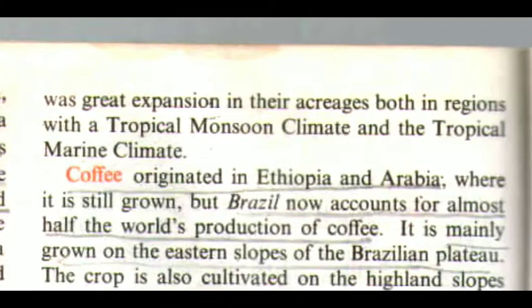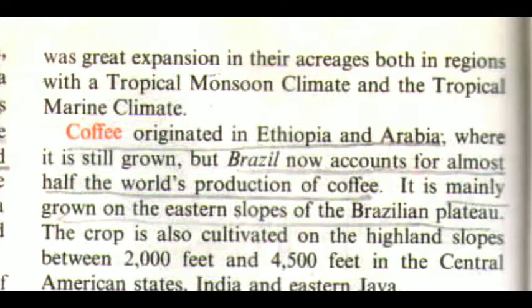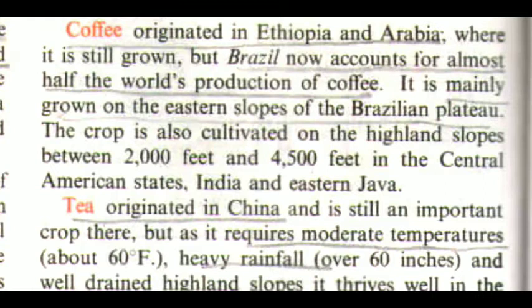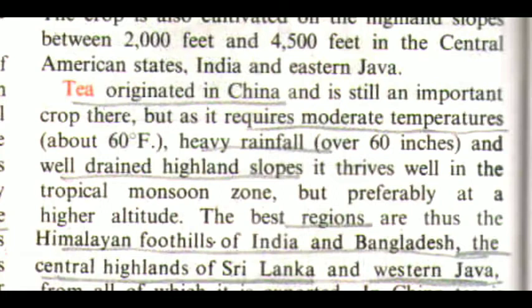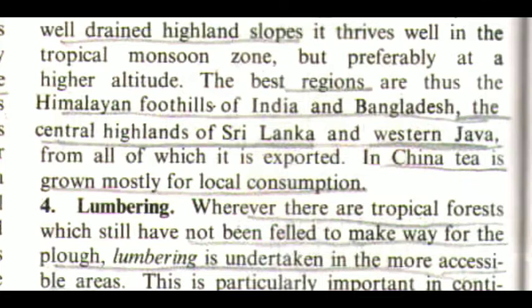Coffee originated in Ethiopia and Arabia, where it is still grown, but Brazil now accounts for almost half the world's production. It is mainly grown on the eastern slopes of the Brazilian plateau, and also cultivated on highland slopes between 2,000 and 4,500 feet in the Central American states, India, and eastern Java. Tea originated in China and is still an important crop there, but as it requires moderate temperatures of about 60 degrees Fahrenheit, heavy rainfall over 60 inches, and well-drained highland slopes, it thrives well in the tropical monsoon zone, preferably at higher altitude. The best regions are the Himalayan foothills of India and Bangladesh, the central highlands of Sri Lanka, and western Java. In China, tea is grown mostly for local consumption.